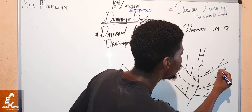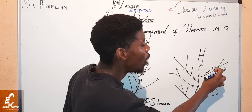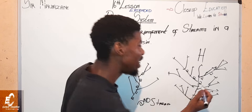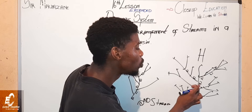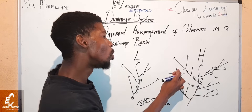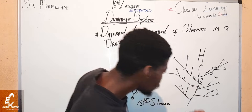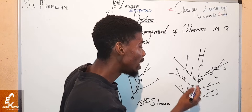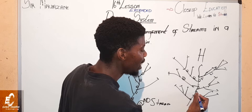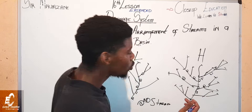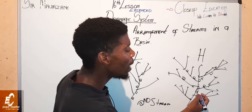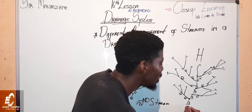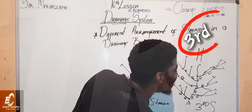Continuing the stream order calculation: 1 and 1 gives 2; 2 and 1 gives 2 because the bigger number wins; 2 and 2 gives 3. So 1 and 2 gives 2, and then 2 and 3 — the 3 wins. Working through the diagram: 1 and 1 is 2, 2 and 1 is 2, and 2 and 3 means 3 wins, making it a 3rd-order stream.